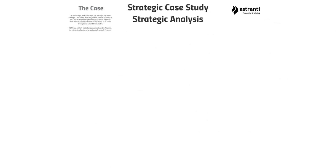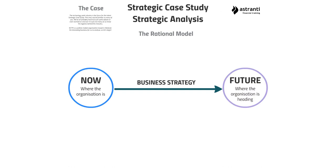We're going to use the rational model for our analysis, which involves looking at where the organization currently is, where it wants to be and what it wants to achieve, and then how it's going to get there. Those are the three parts of the rational model.